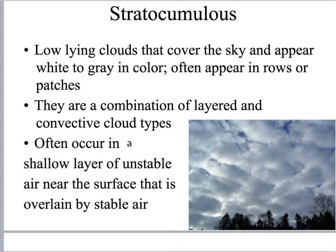Stratocumulus clouds are a mixture of stratus and cumulus clouds. These are low-lying clouds that cover the sky and appear white or gray. They often appear in rows or patches — a combination of layered stratus clouds and convective cumulus clouds. They occur in a shallow layer of unstable air near the surface overlaid by stable air, so the rising air forms clouds but gets stopped by the stable layer above.